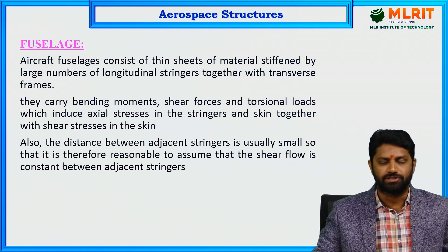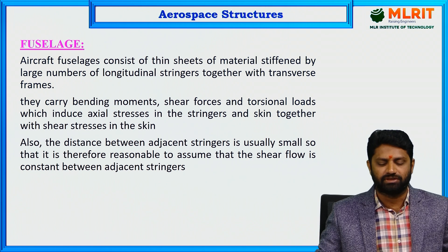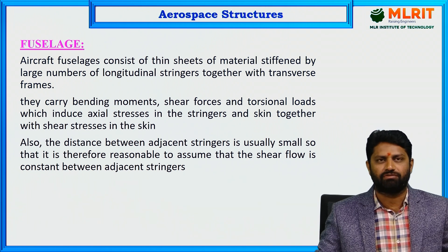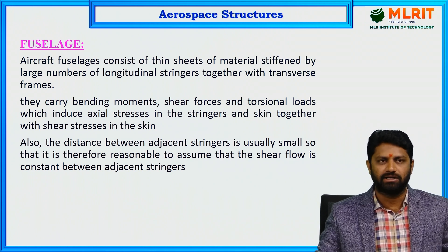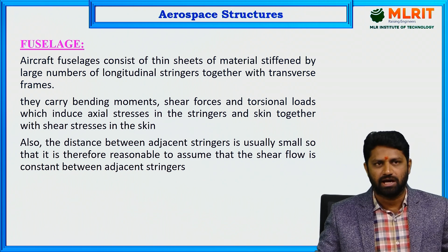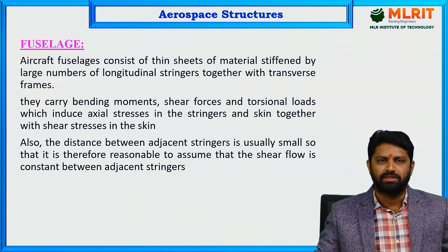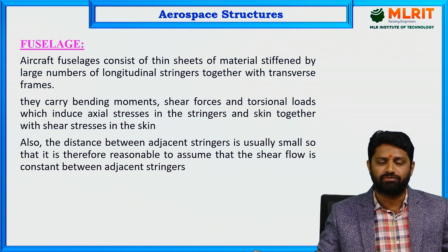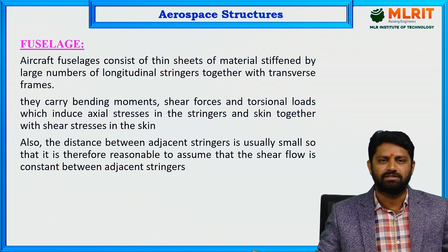Coming to the fuselage: aircraft fuselage consists of thin sheets of material, usually stiffened by a large number of longitudinal stringers together with transverse frames. They carry bending moments, shear forces, and torsional loads, which induce axial stresses in stringers and the skin, together with shear stresses in the skin. The distance between adjacent stringers is usually small, so it is reasonable to assume that shear flow is constant between adjacent stringers.